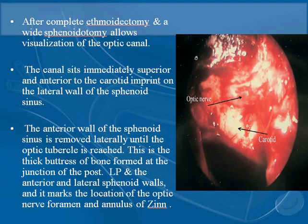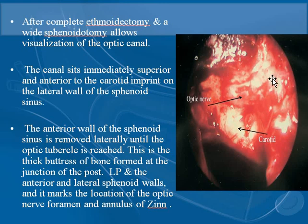After completion of the ethmoidectomy and wide sphenoidotomy, this allows visualization of the optic canal. We can see the carotid and the optic canal and optic nerve. The canal sits immediately superior and anterior to the carotid imprint on the lateral wall of the sphenoid sinus. The anterior wall of the sphenoid sinus is removed laterally until the optic tubercle is reached — a thick buttress of bone formed at the junction of the posterior lamina papyracea and the anterior lateral sphenoid wall — marking the location of the optic nerve foramen.